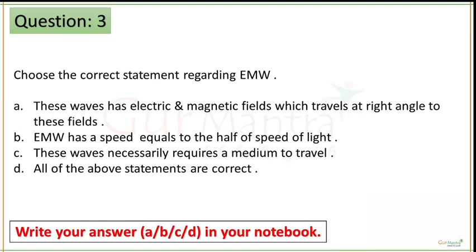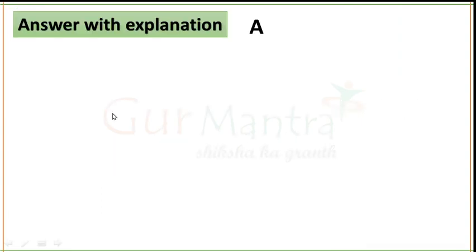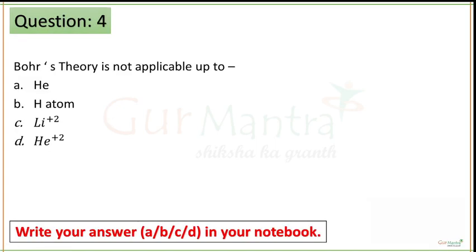Time up guys. You have to choose the correct statement regarding electromagnetic waves. Option A says these waves have electric and magnetic fields which travel at right angles to these fields — this is the correct option. Option B says electromagnetic waves have a speed equal to half the speed of light — this is wrong; electromagnetic waves travel at the speed of light. Option C says these waves necessarily require a medium to travel — this is also wrong; these waves can travel in vacuum. Option D says all of the above are correct — this is also wrong, since B, C, and D are wrong. Option A is correct. Next question — please solve it quickly, your time starts now.